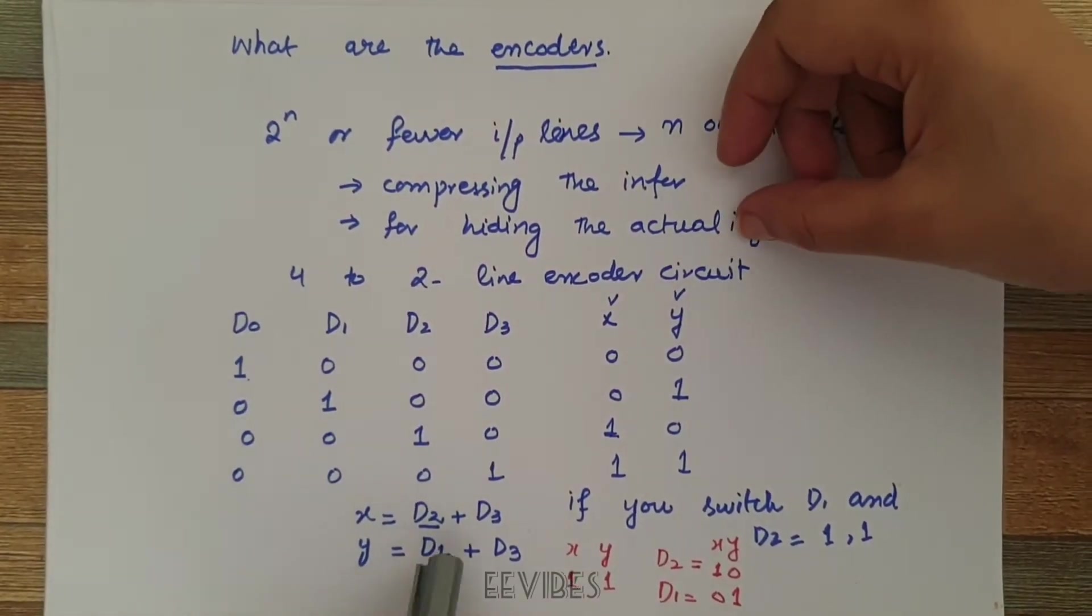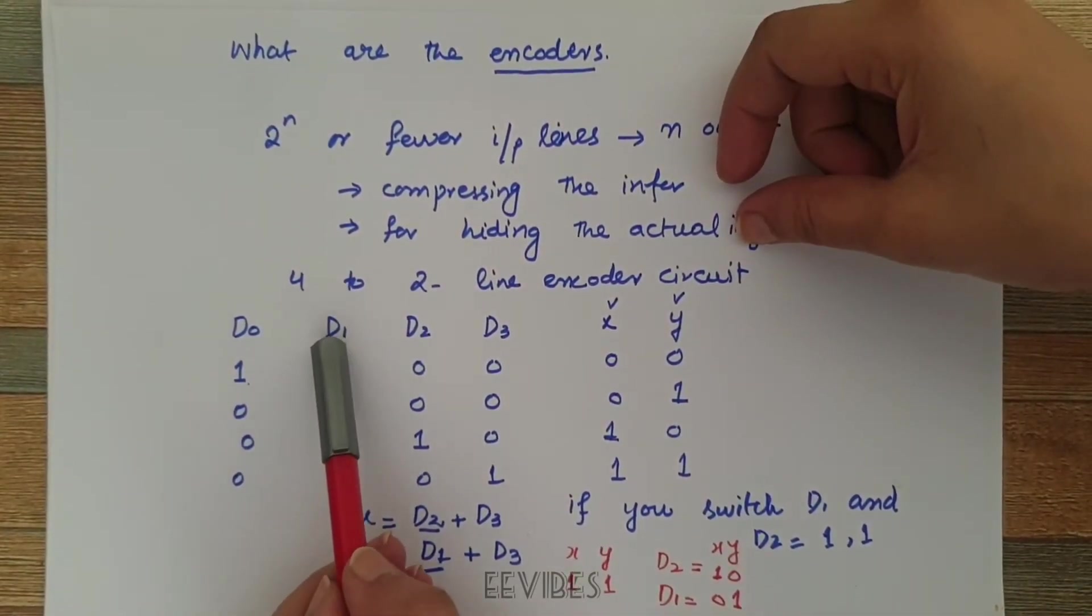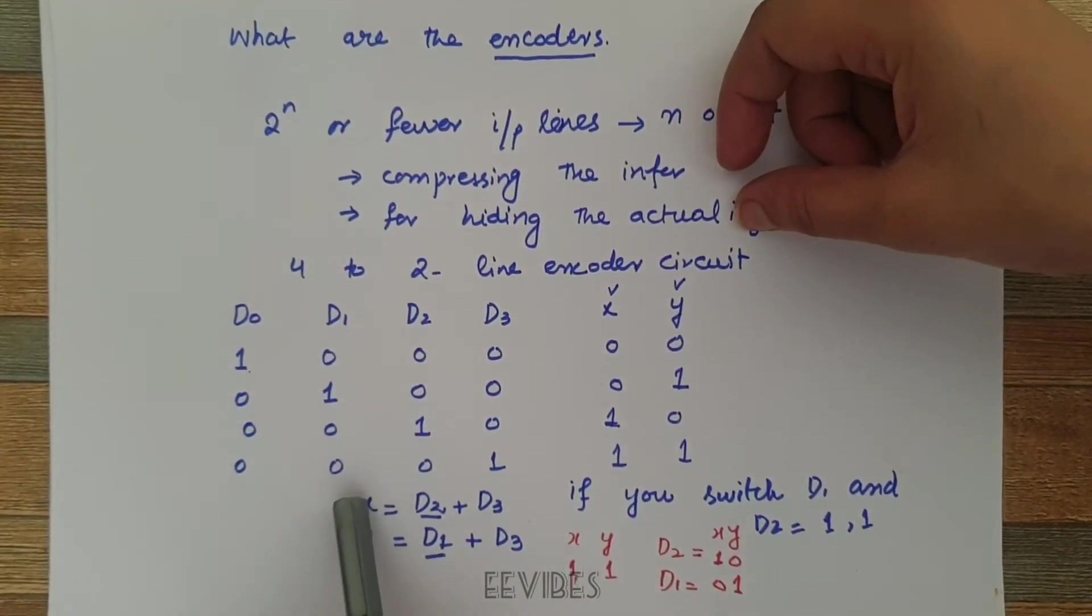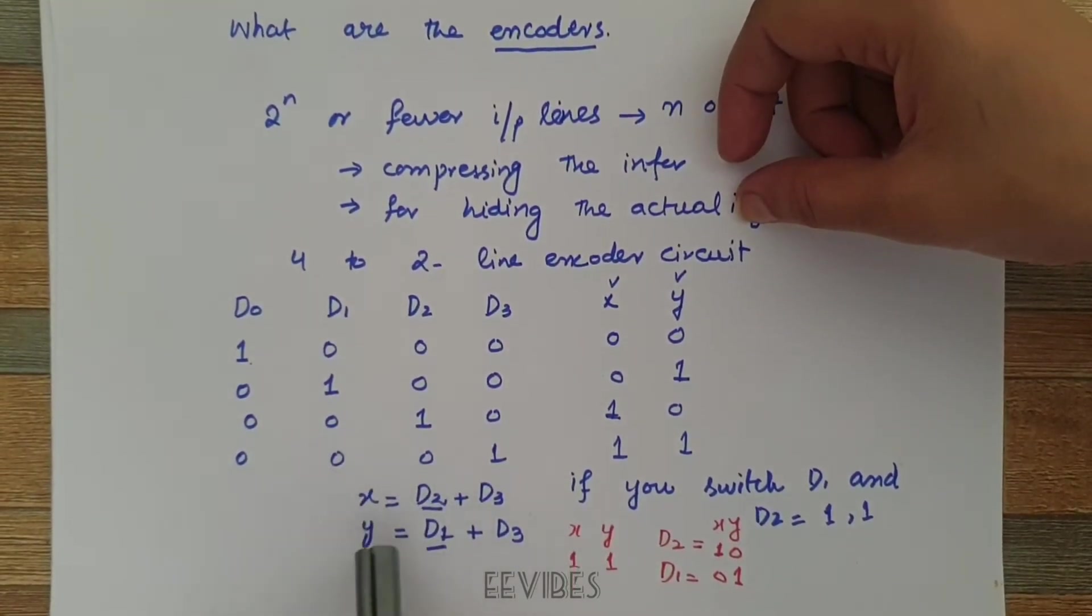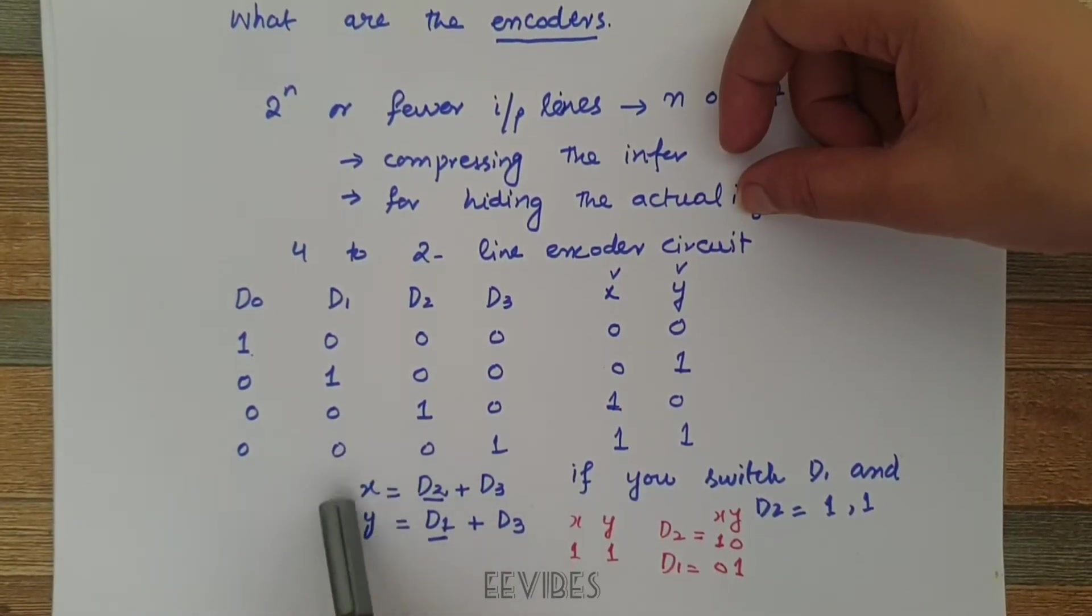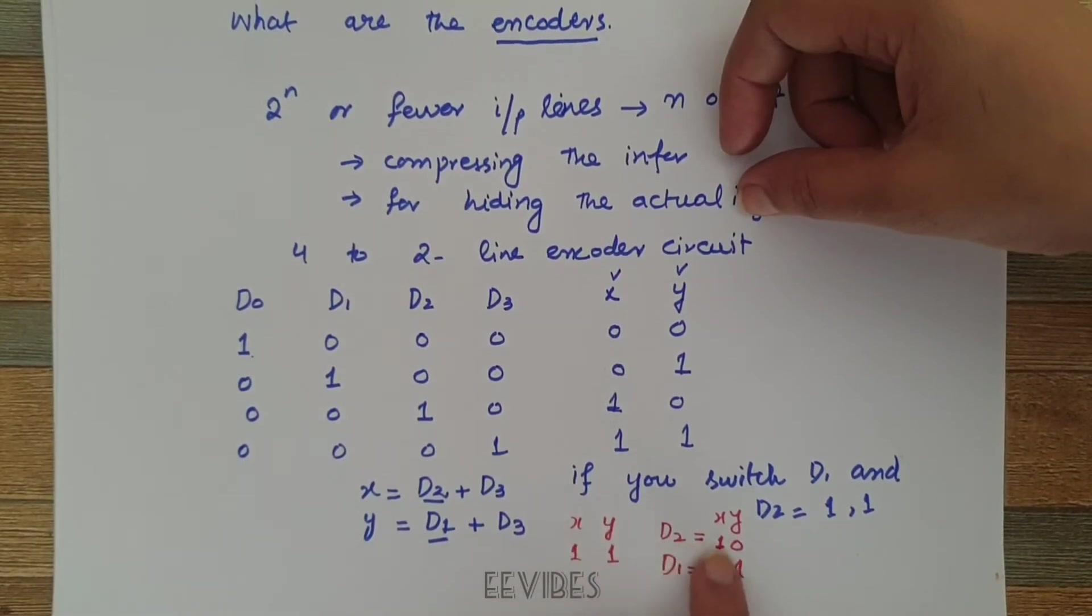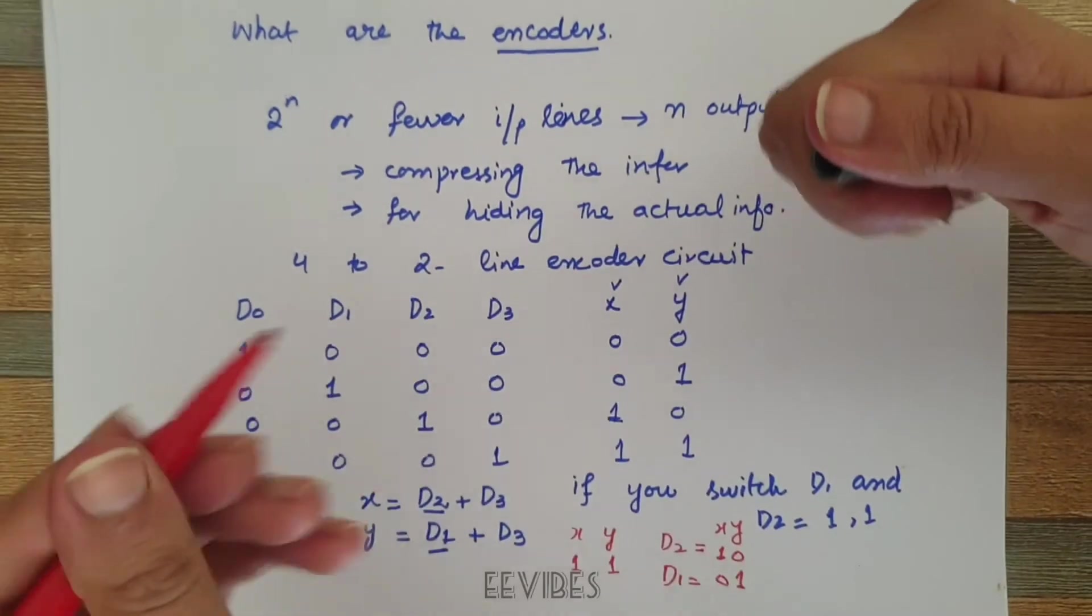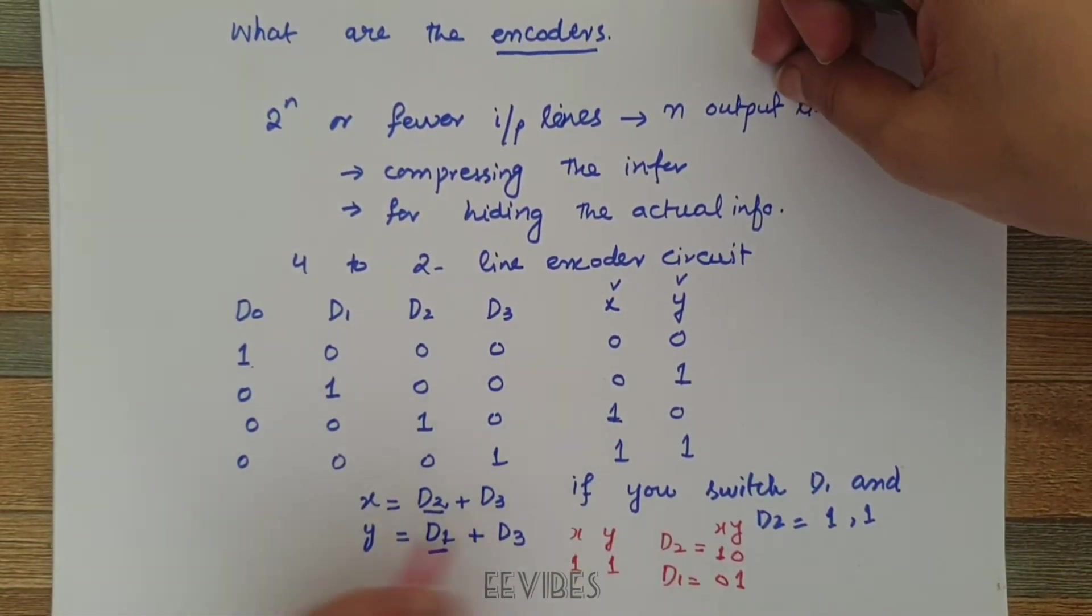So it is observed that when we have turned on both switches D1 and D2 equal to 1, since the functions of x and y include both D1 and D2, they will generate the output code 1, 1, which is neither the code for the representation of D2 nor D1. This is one problem that is associated with this.